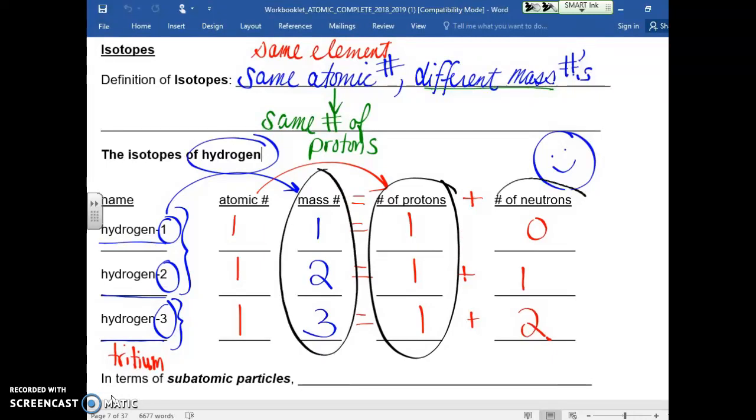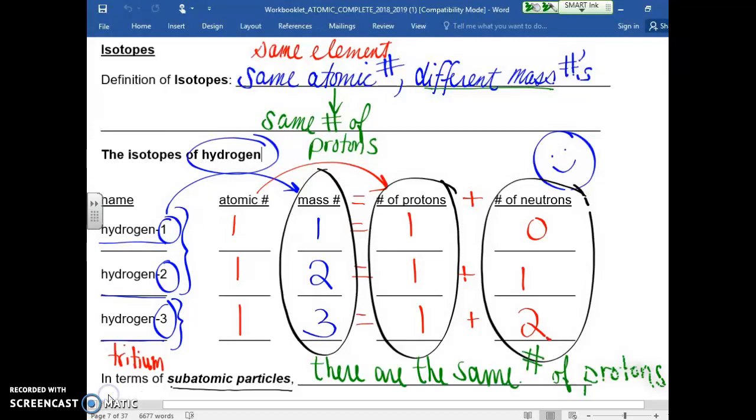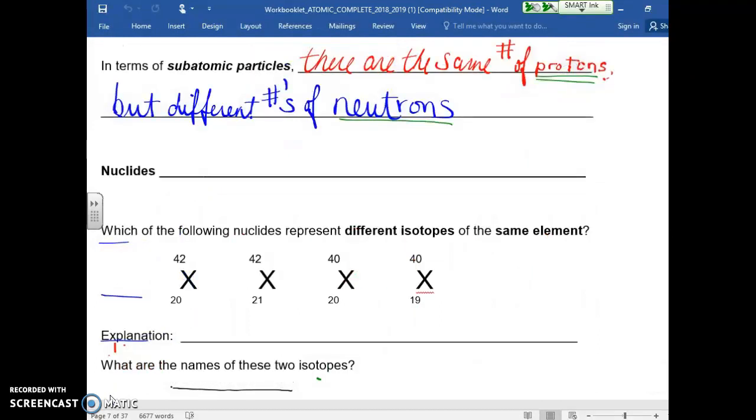If I have the same number of protons, and I have different numbers of mass numbers, the only explanation is that it is because there are different numbers of neutrons. And there you have it.